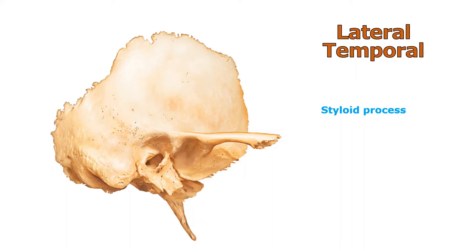The styloid process — 'oid' means shaped like, and a process is something that sticks out of a bone. It can reach nothing or connect to another bone. 'Styloid' means shaped like a stylus, the tool used to write on screen — like a pen or pencil. So the styloid process is a bony projection shaped like a stylus, right there.